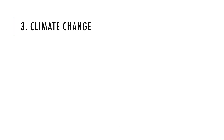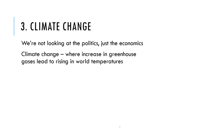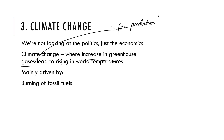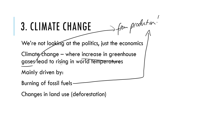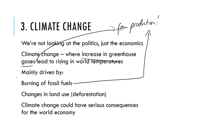Another issue for the Australian economy is climate change — we're looking at this purely in terms of the economics, not the politics. Simply put, there's an increase in greenhouse gases associated with production, mainly driven by the burning of fossil fuels. Changes in land and forest use also matter — when land is cleared and forests are destroyed, that reduces the environment's capacity to help and also reduces arable land. Together, burning fossil fuels and changes in land use drive climate change, which can have serious consequences for the world economy.